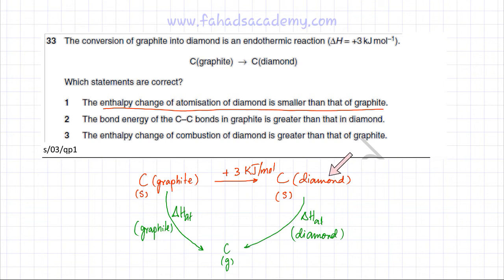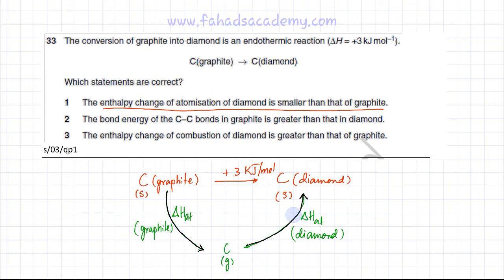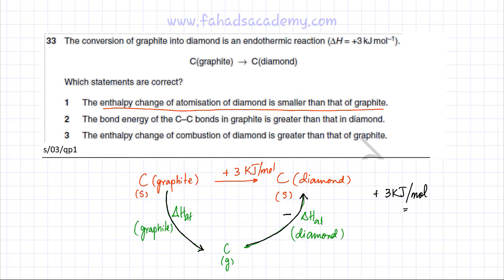Graphite gets converted into gaseous atoms, and diamond gets converted into gaseous atoms. Using Hess's Law, one path equals the other. To follow the alternative path, one arrow needs to be reversed, so its sign changes. Therefore: +3 kJ/mol = enthalpy of atomization of graphite minus enthalpy of atomization of diamond.